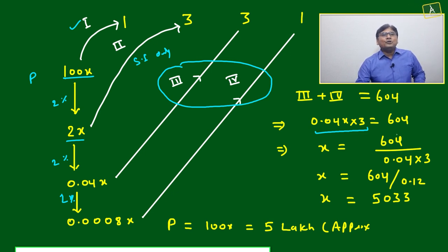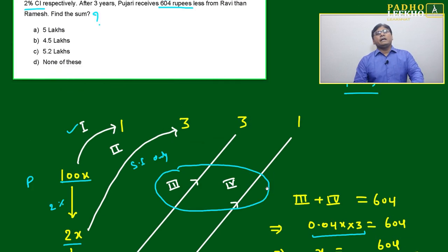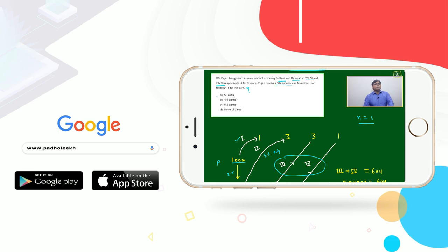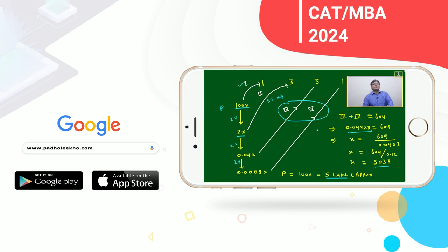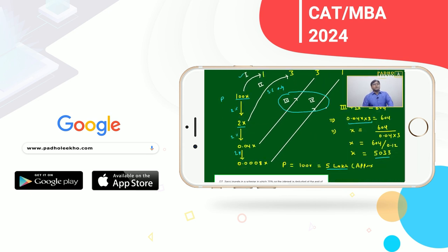Then x equals 503.3, approximately. The principal amount is 100x, so if you multiply, it's around 5 lakh rupees. You can mark it as 5 lakh. Don't mark 5.2 because it won't increase that much. 5 lakh only.